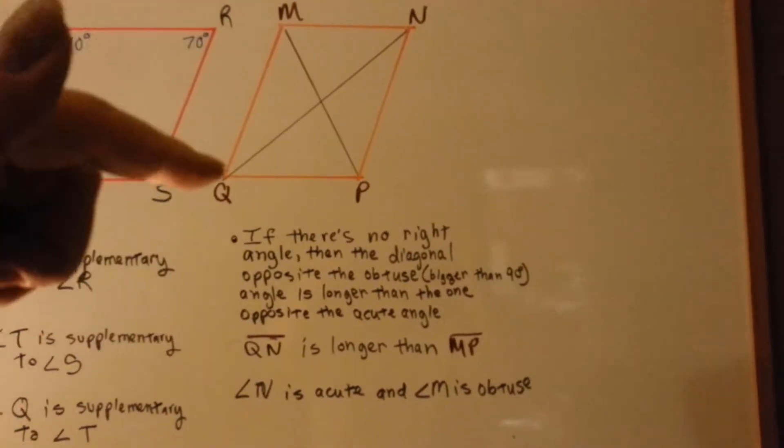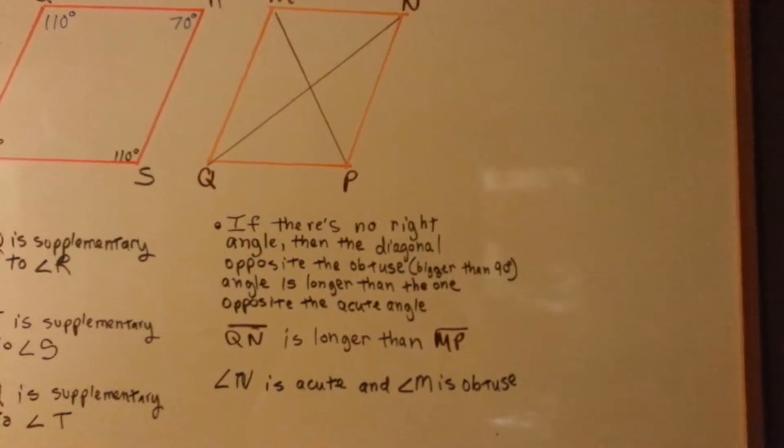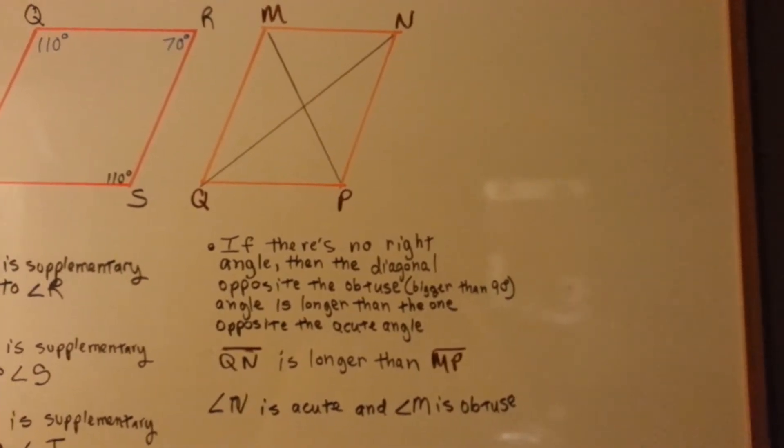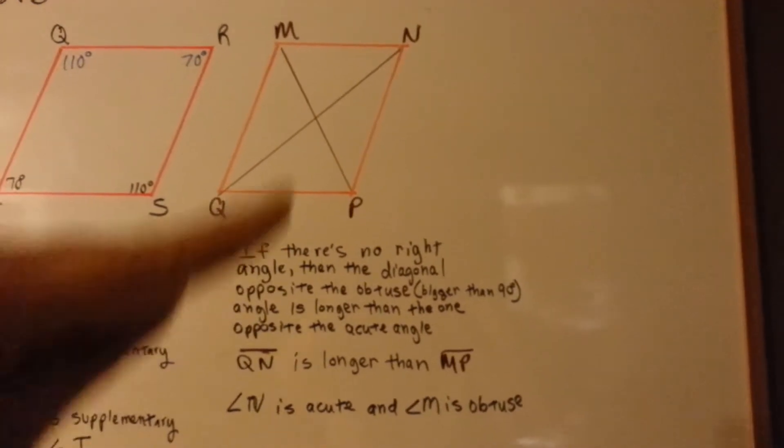See how they're open bigger? And here's an acute angle. Well, the diagonal opposite the obtuse one, the one bigger than 90 degrees, is longer than the one opposite the acute angle.